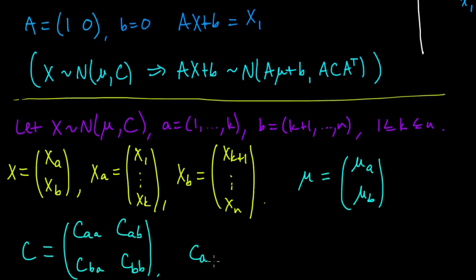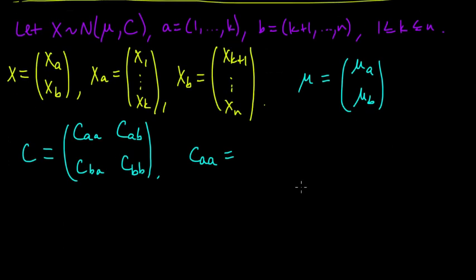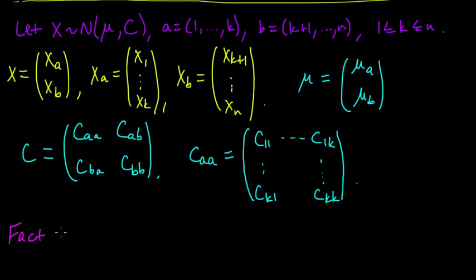And CAA, I won't write out all of them, but just to give you the picture, CAA is going to be the upper left k by k block of C. It's just this upper left block. So it's just C11 down to CK1 over to C1K down to CKK, where Cij is the ijth entry of C. So now we got all of our notations straight.